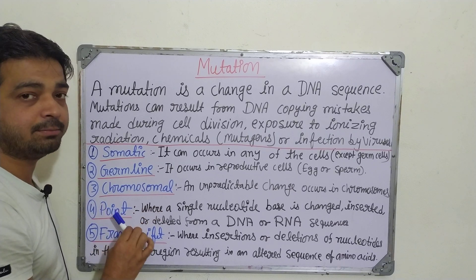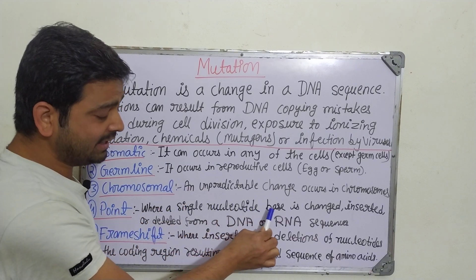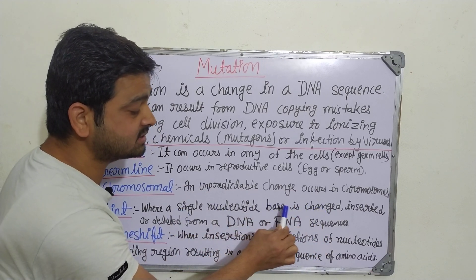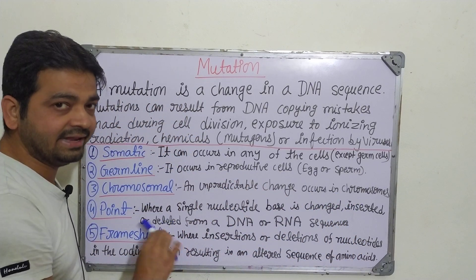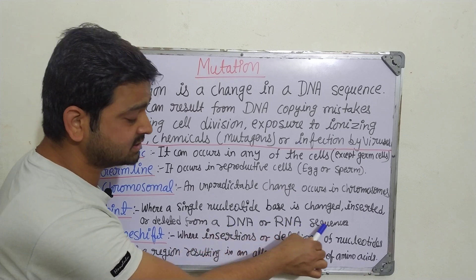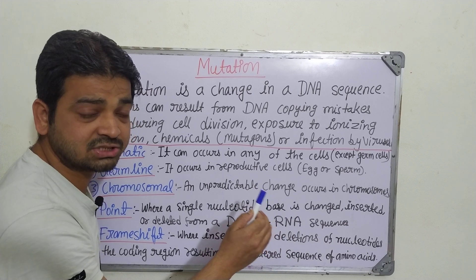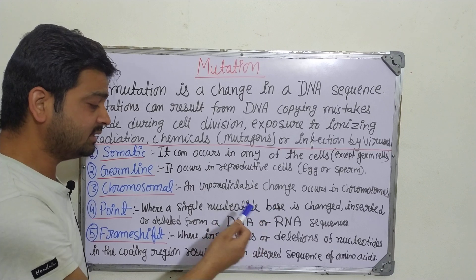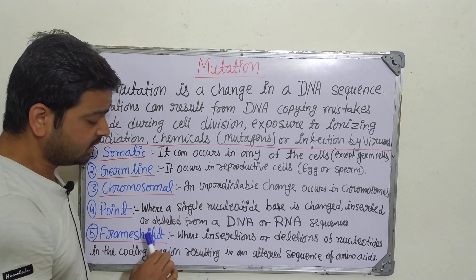Coming to the fourth type: point mutation. This is where a single nucleotide base is changed, inserted, or deleted. Any kind of disturbance in a DNA or RNA sequence — whenever a single type of change in a nucleotide occurs, whether inserted, deleted, or changed — that is called a point mutation.